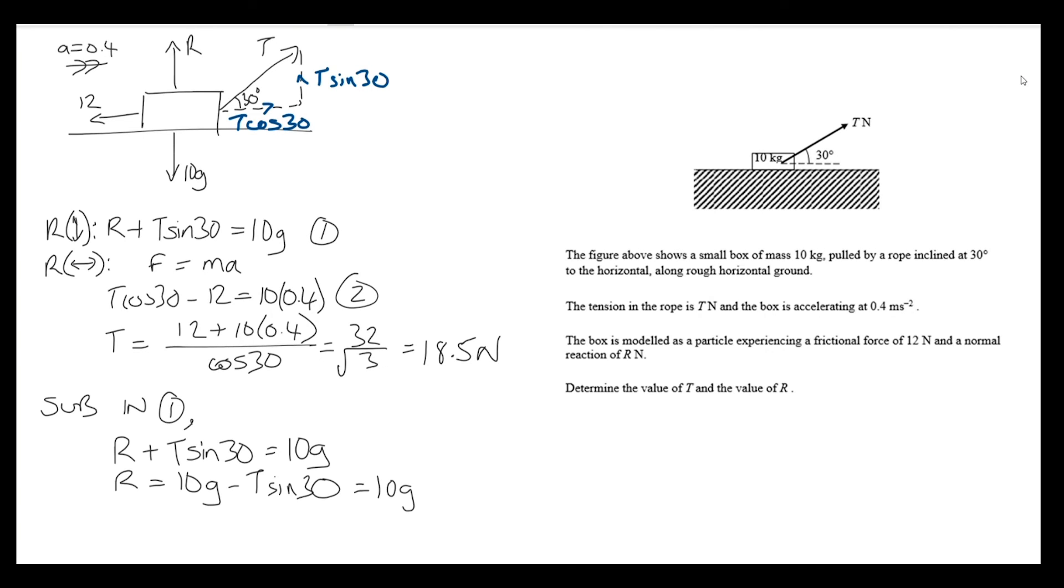10g minus 32 over root 3 times sine 30 is what I'm going to type into my calculator. Sine 30 is a half, and we get a value for r of 88.8 newtons to three significant figures. So we found both r and t as asked in the question.